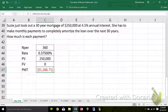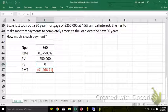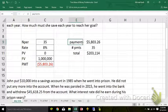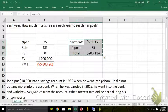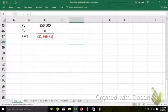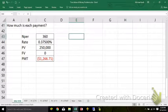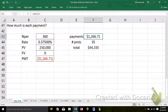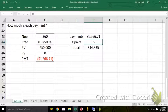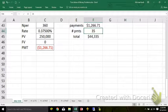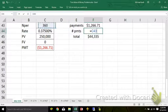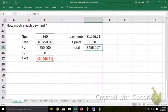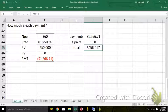Each of the payments would be $1,266.71. I could also do what I did here to calculate the total amount paid and the total interest paid. That would be $1,266.71 a month. And there would be 360 payments. So the total I'll give them is $456,017.